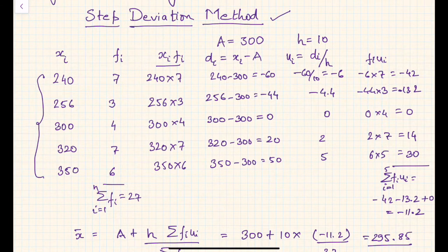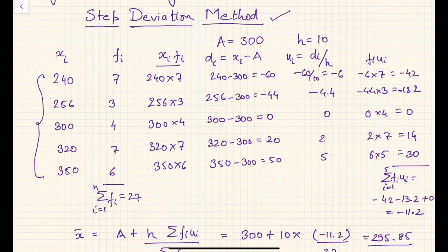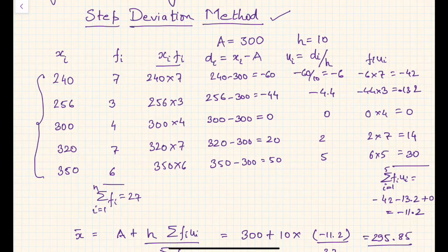So the objective is to reduce calculation load. In the previous assumed mean method we saw how calculation load was reduced. In the step deviation method we go one step further and simplify calculations a little bit more. As we found out di in the assumed mean method, we assume a mean of the given data set, and in this example we have assumed that 300 is the assumed mean.